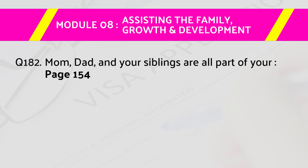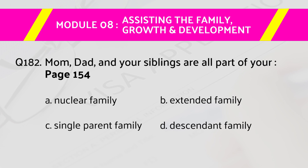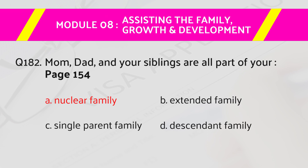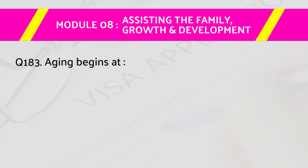Question number 182: Mom, dad, and your siblings are all part of your — page number 154. Answers are: A) the nuclear family, B) the extended family, C) single parent family, D) the descendant family. The right answer is A, the nuclear family.